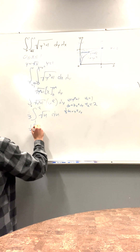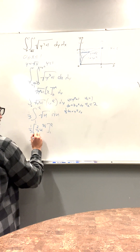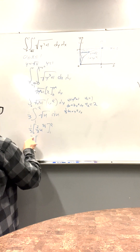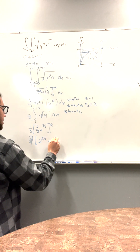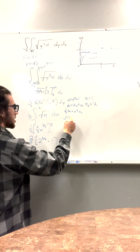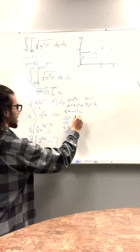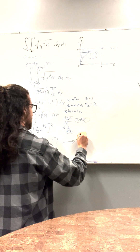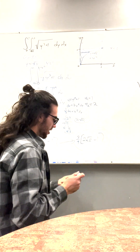Now we can evaluate this. u to the 1/2 integrates to (2/3) u to the 3/2, evaluated from 1 to 2, which gives us (2/9)(2 to the 3/2 minus 1). 2 to the 3/2 — 2 to the third is 8, which breaks down into 2 and 4, which breaks down into 2 and 2. Those 2s come together, so it's going to be 2 square root of 2. So our final answer is 2/9 times (2 square root of 2 minus 1). And that is our answer. We could simplify further, but we won't.